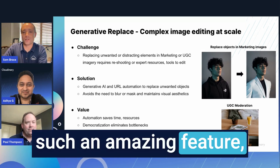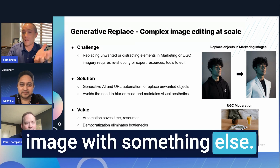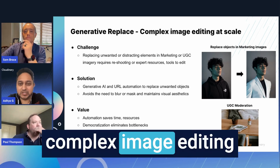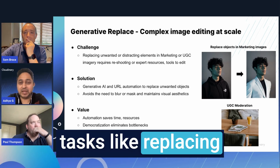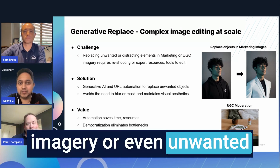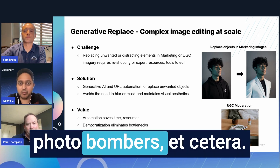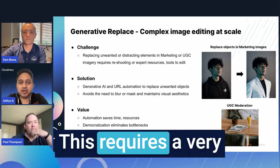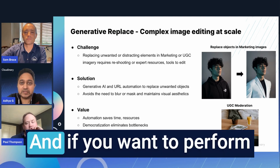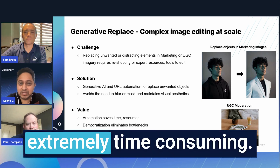This seems like such an amazing feature to be able to replace something that's in an image with something else. How is this possible and why is this powerful? When you think about complex image editing tasks like replacing objects in marketing imagery or even unwanted elements in user-generated content — for example, photobombers — this requires a very specialized skill set and even tools. And if you want to perform this across large sets of images, it can be extremely time-consuming.